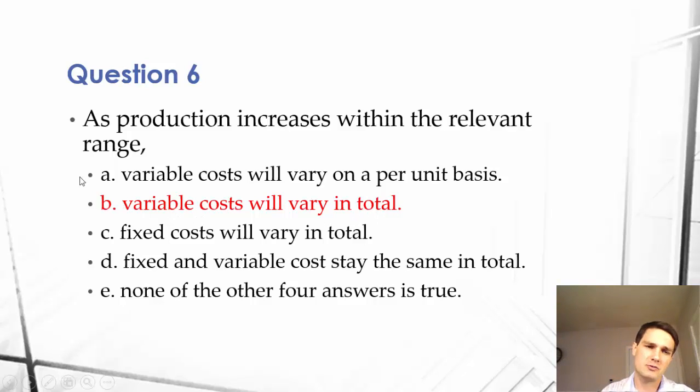Let's go through every answer to make sure why the other ones aren't correct, because knowing why something isn't correct is just as important as knowing why answer B is correct. It will help your full understanding of the material, which is essential. So A, variable costs will vary on a per unit basis. They don't. They're proportional. Everything in our previous example was 10, so that does not vary. This is wrong.